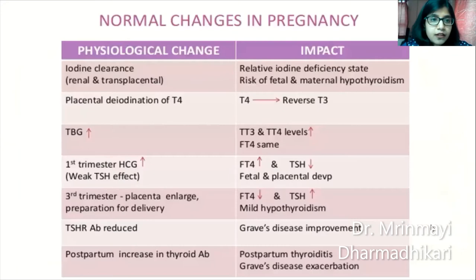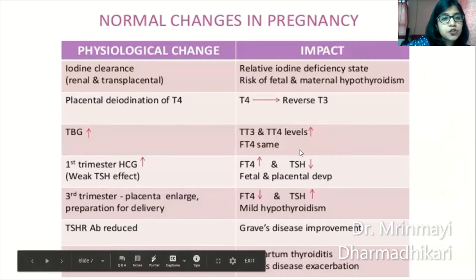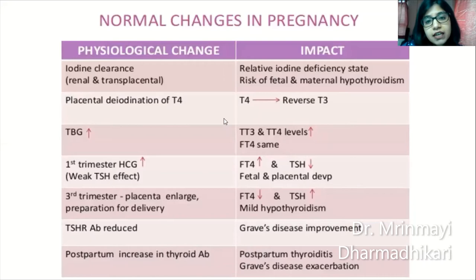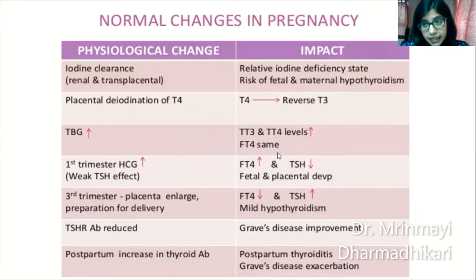Normal changes in pregnancy include increased iodine clearance due to increased renal clearance as well as transplacental transfer of iodine to the fetus, giving rise to a relative iodine deficiency in the pregnant mother. If iodine is not supplemented there is a risk of fetal and maternal hypothyroidism. Second change is placental deiodination of T4 to T3 by deiodinase. Increase in TBG is mainly due to increased maternal estrogen, which causes increased synthesis of TBG in the liver as well as decreased clearance. Increase in TBG causes increase in total T3 and T4 levels, but free T4 levels more or less remain the same because of its regulation by TSH receptors.